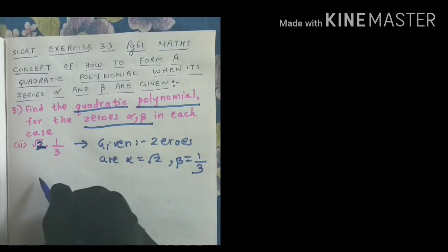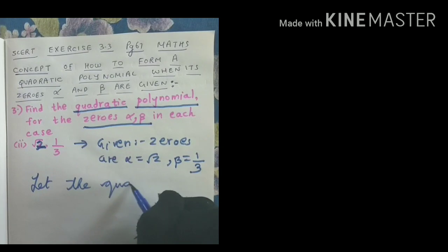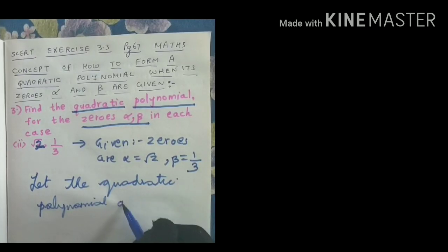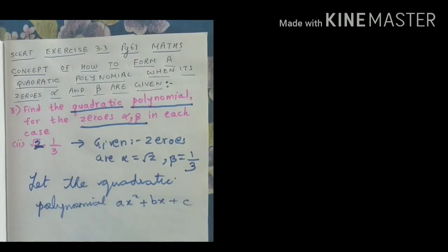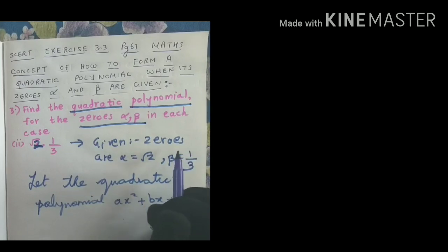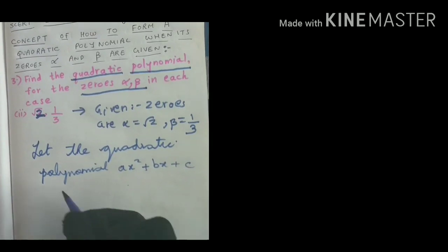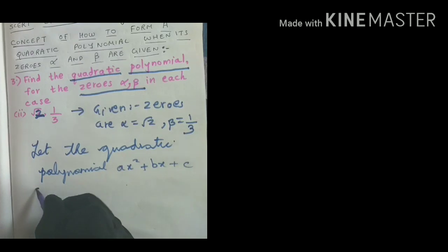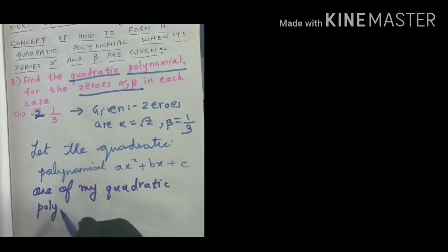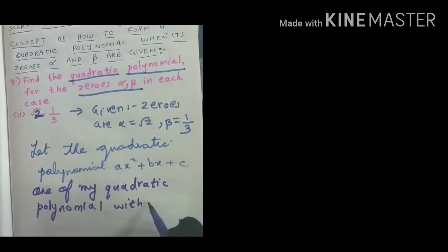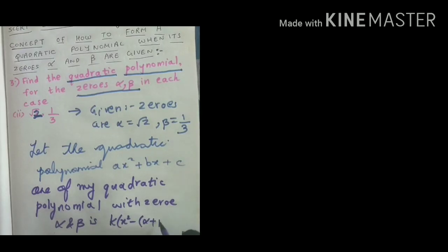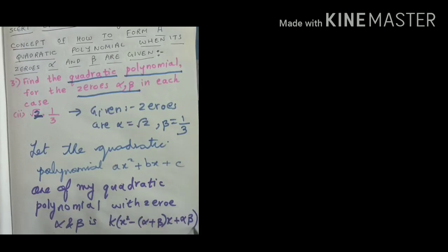What I have to form is a quadratic polynomial. The standard form of a quadratic polynomial is ax squared plus bx plus c, since the degree is 2. So I'm assuming my quadratic polynomial is ax squared plus bx plus c. The standard form of a quadratic polynomial with zeros alpha and beta is: k into x squared minus (alpha plus beta) into x plus alpha beta.